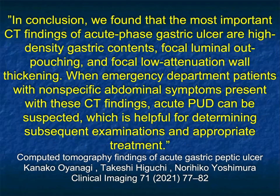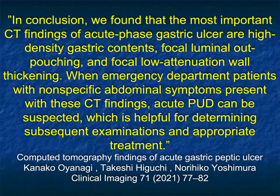In conclusion, the most important CT findings of acute-phase gastric ulcer are high-density gastric contents, focal luminal outpouching, and low-attenuation wall thickening. Coronal views and cinematic rendering nicely show wall thickening and ulceration, making CT a very important tool in evaluating these patients.